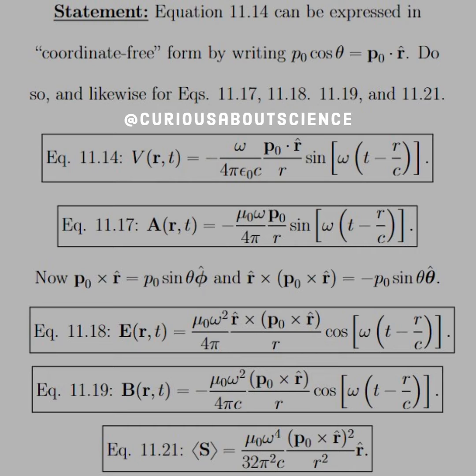Well, 14 was the scalar potential, so we got rid of that cosine and the P-naught with the dot product. Similarly, we got rid of, in the vector potential, that Z-hat and the little P-naught with just a bold-faced P-naught.